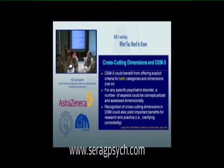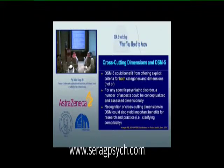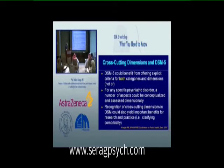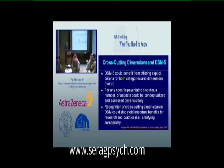The major thing that we tried to introduce in the DSM-5 — and you'll really see this in the large book and not so much in the small monograph — is that a DSM could benefit from having explicit criteria for both categories and dimensions, not either/or. For any specific psychiatric disorder, a number of aspects could be conceptualized and assessed dimensionally, and we wanted a way of looking at cross-cutting dimensions in DSM that could help for research as well as practice.